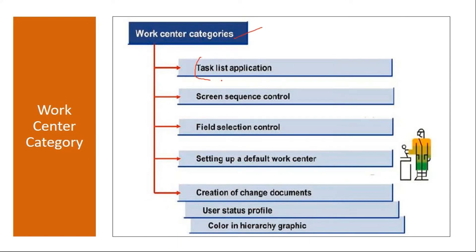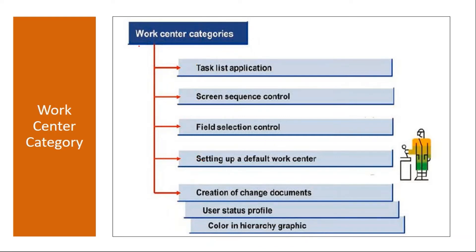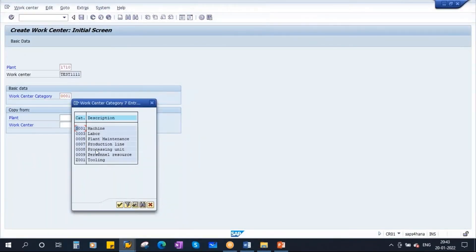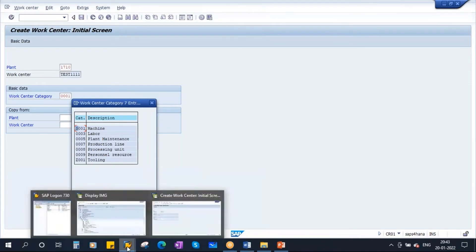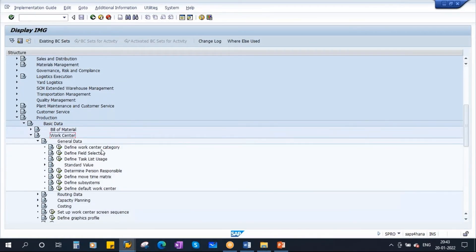The work center category controls in which task list application the work center can be used, the screen sequence control, and the field selection control. It also controls the setting up of a default work center. Now let's go to configuration. In the IMG, open the Work Center node, then General Data, and you will see 'Define Work Center Category'.